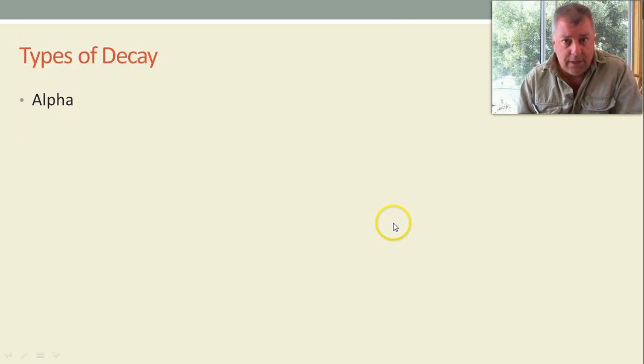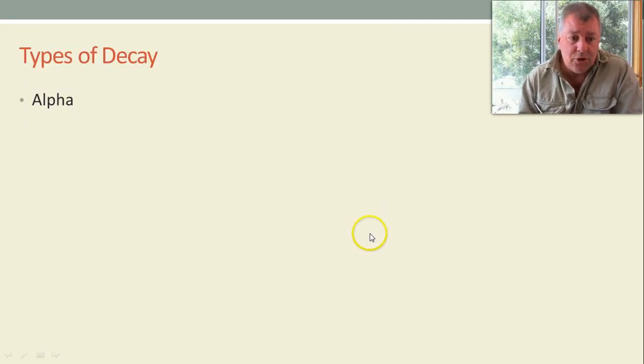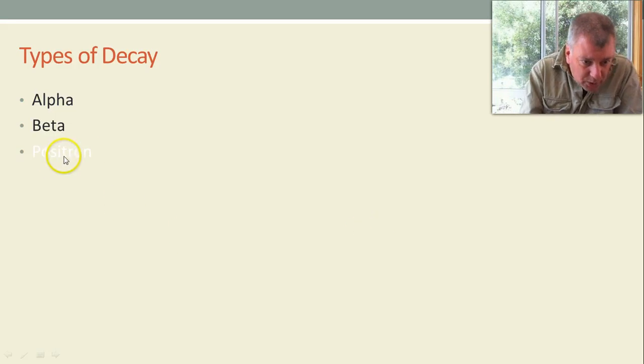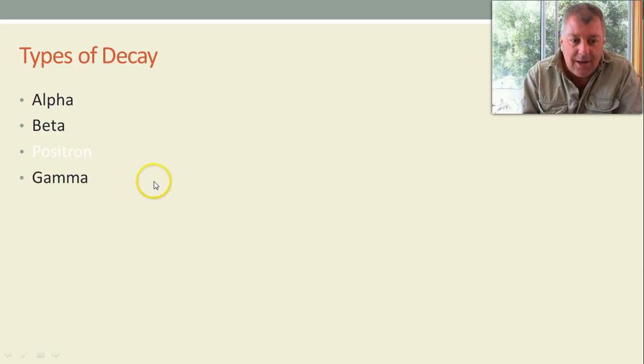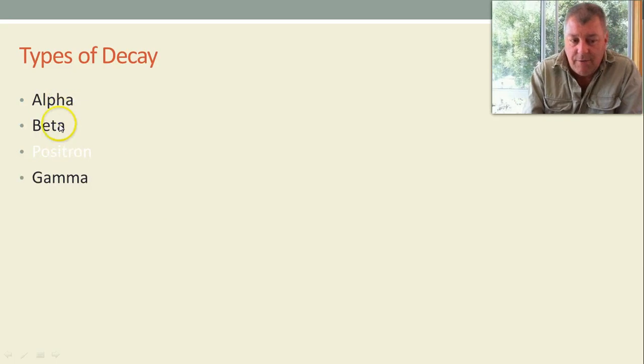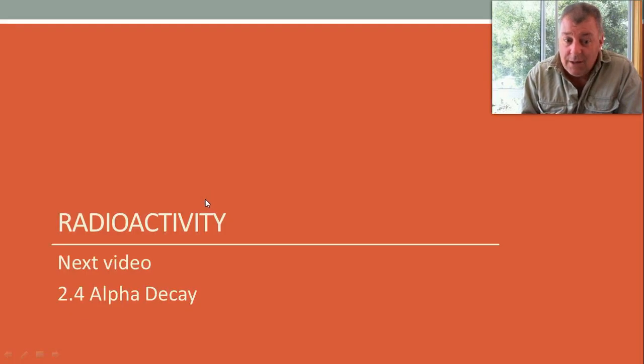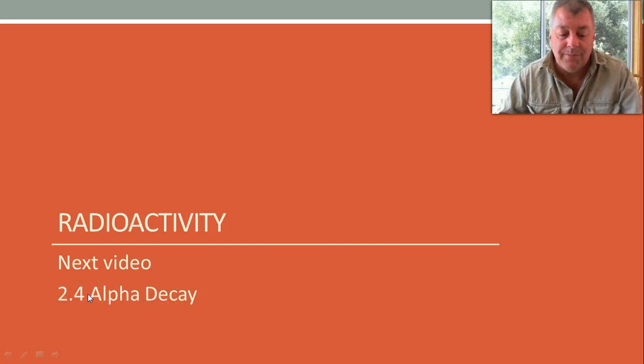Right. My mouse is flashing everywhere. What are the types of radiation? Alpha. Beta. Can you read that? It's written in white. It says positron and gamma. And we're going to be studying alpha, beta, and gamma in a bit more detail. Positron, we'll talk about briefly, but that's about it. And that will be in the next video. We'll start going through those. So look forward to alpha decay video 2.4 in physical science. See ya.